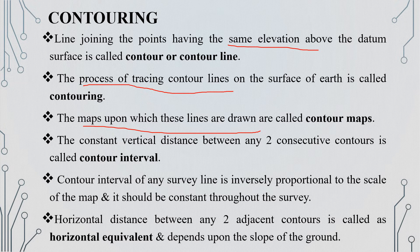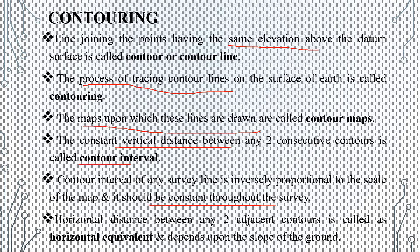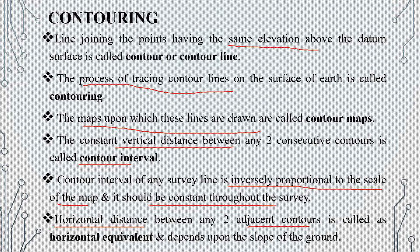Here is the contour interval. The contour interval is the vertical distance between two consecutive contours. This vertical distance is always uniform and constant. It is inversely proportional to the scale of the map. The horizontal equivalent is the horizontal distance between two consecutive contours.